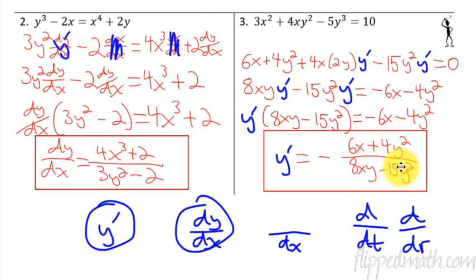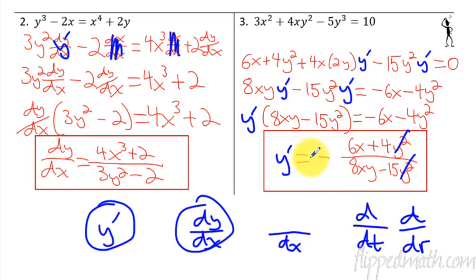Do not do this common mistake — this is like an Algebra 1 freshman mistake. Please don't do this: y squareds cancel, or 6 over 8 reduces. Don't do that. This is a fraction. The entire numerator is together. You can only cancel like that if it's separated by multiplication and division. I just thought I should remind you because I keep seeing that mistake.